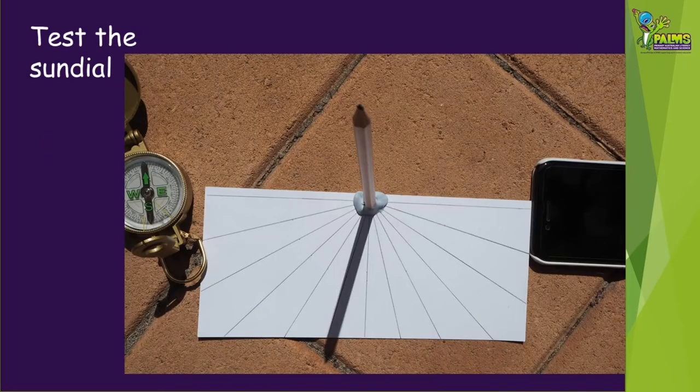Now you can test your sundial. You'll need to take your compass or mobile phone with the compass app outside on a dry, sunny day. You may need some adult help with this. Line up the baseline with the east-west direction using the compass or phone app. The angled lines on the base should be on the south side.